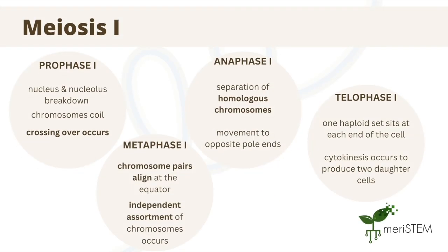Here we have meiosis 1 summarised. We now know most of these processes from learning about mitosis, but just note that there are some differences, such as the fact that crossing over occurs — the process by which chromosomal segments can be switched between two homologous chromosomes, resulting in the recombination and exchange of genetic material. And to repeat, in metaphase 1, homologous pairs align on either side of the equator, rather than individually on the equator like in mitosis.